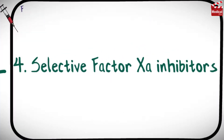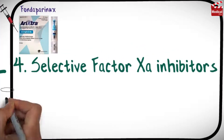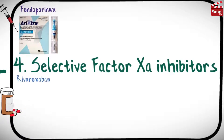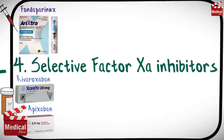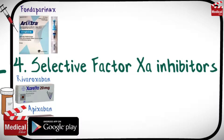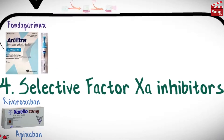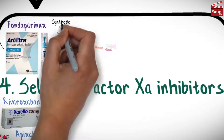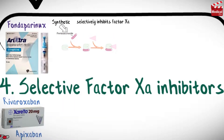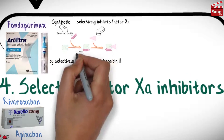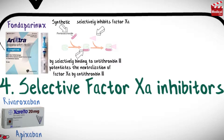This category of drugs includes the parenteral agent fondaparinux and oral agents rivaroxaban and apixaban. We already discussed fondaparinux in the activators of antithrombin 3 lecture, but let's summarize it again. Fondaparinux is a synthetic pentasaccharide that selectively inhibits factor 10a by selectively binding to antithrombin 3, potentiating the neutralization of factor 10a by about 300 to 1000 fold.